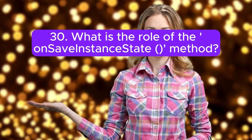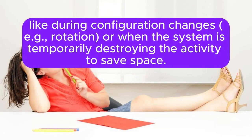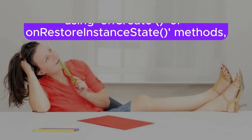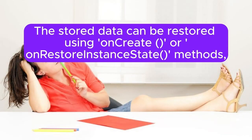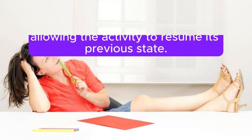Question 30: What is the role of the onSaveInstanceState method? onSaveInstanceState is a method used to store data within a bundle before the activity is destroyed — for example, during configuration changes like rotation or when the system temporarily destroys the activity to save space. The stored data can be restored using onCreate or onRestoreInstanceState methods, allowing the activity to resume its previous state.